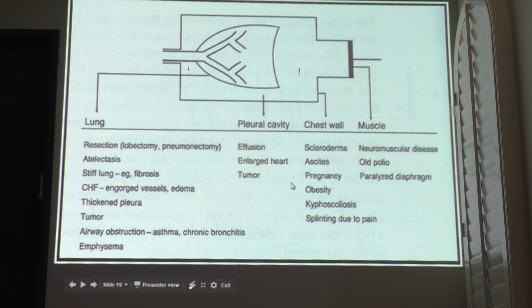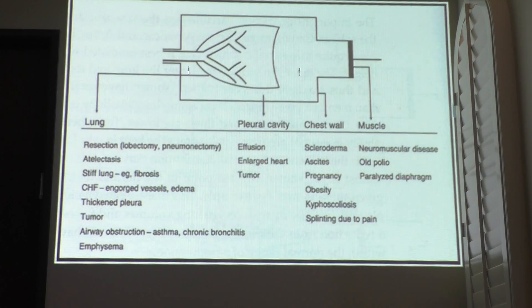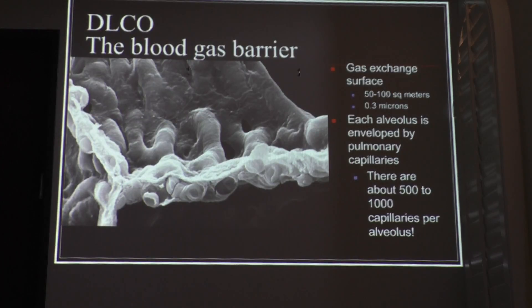From the chest wall, anything impairing the mechanics of inspiration and expiration — obesity, pregnancy, ascites, or splinting due to pain. Have you ever seen a rib fracture? It's extremely painful and there's no way to immobilize those patients, so they complain of shortness of breath due to splinting. And from the muscles: poliomyelitis, some sort of myopathy or neuromuscular disease, myasthenia gravis, or a paralyzed diaphragm.